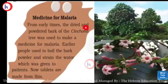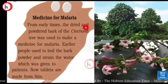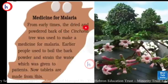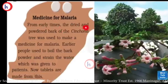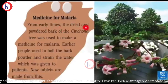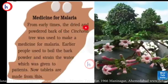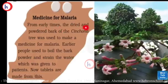From early times, the dried and powdered bark of the Chinchona tree was used to make medicine for malaria. In olden times there were no tablets, so people used to boil the bark powder and strain the water, which was given to the patient.